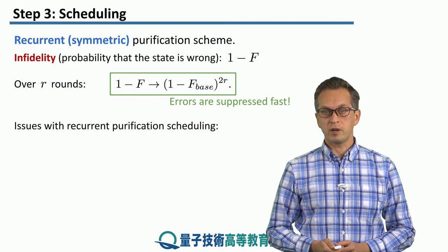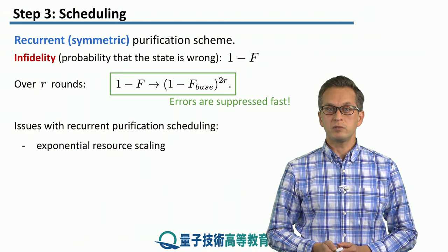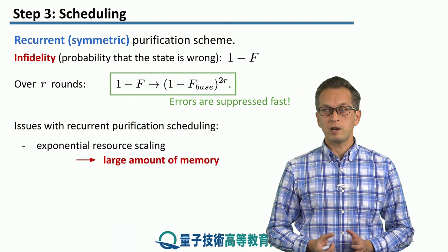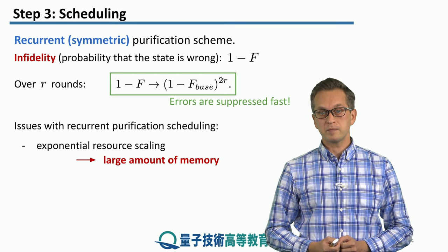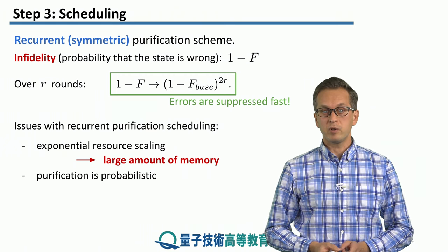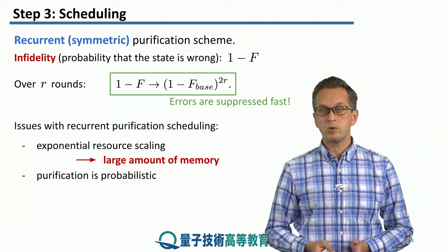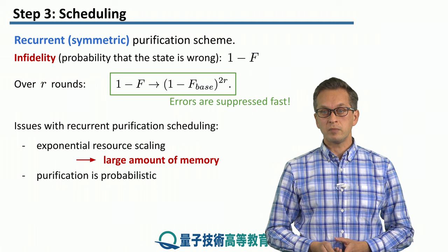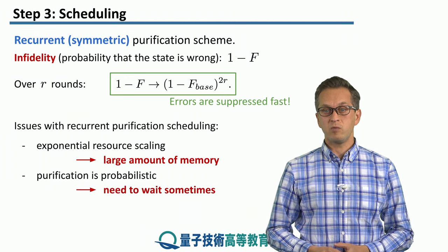However, there are issues with recurrent purification scheduling. The exponential resource scaling is one problem — this means that we require large amounts of quantum memory in order to store all those Bell pairs. Furthermore, the purification is probabilistic; it doesn't always succeed. Meaning that if one of the pairs fails purification, the other one has to wait for a new partner, which increases the wait time.